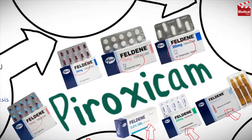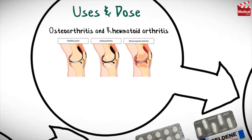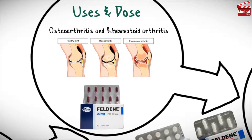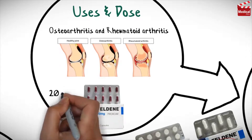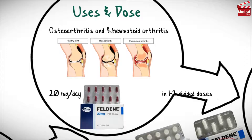It is used in the treatment of osteoarthritis and rheumatoid arthritis. The usual dose of piroxicam is 20 mg per day, in 1 to 2 divided doses.